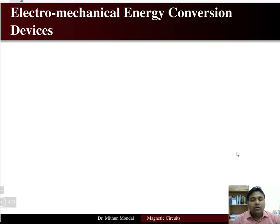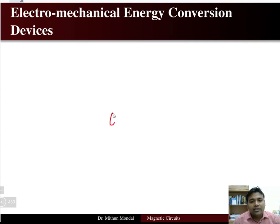The next lecture we are going to discuss in magnetic circuit is electromechanical energy conversion devices. In the first lecture of magnetic circuit we discussed that electrical energy will be converted to mechanical energy and mechanical energy will be converted to electrical energy. Devices that perform this conversion are known as electromechanical energy conversion devices.